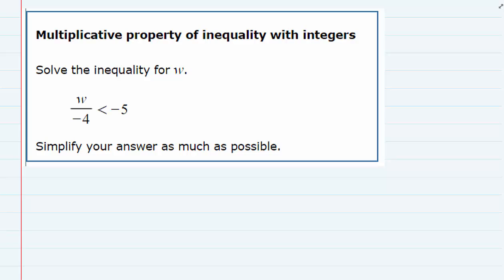We are solving this inequality for w, and the w is on the left-hand side being divided by negative 4 with a negative 5 on the right-hand side.